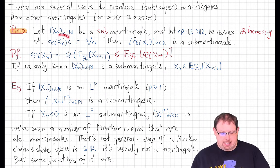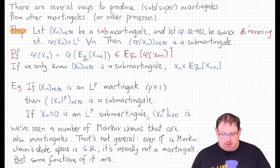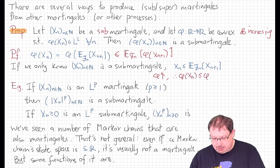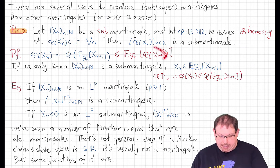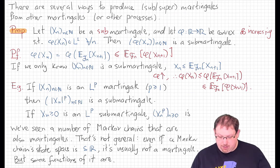Now suppose that we only know that x_n is a sub-martingale to start with. Can we make this same argument? Well, almost. What we would need is to have a less-than-or-equal-to sign there. Sub-martingale means that x_n is less than or equal to that conditional expectation, and we'd like to pass phi through the conditional expectation, which is exactly what being increasing means here. So if phi is a non-decreasing function, it follows that phi of x_n is less than or equal to phi of this conditional expectation, and then by the same argument above, that's less than or equal to the conditional expectation of phi of x_{n+1}, showing that phi of x_n is a sub-martingale.